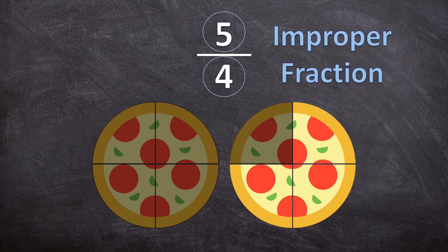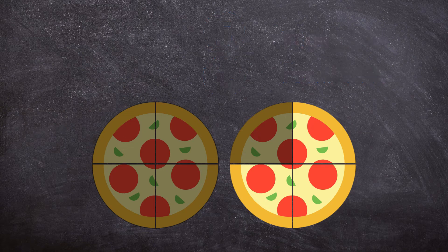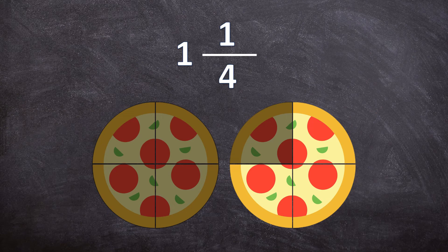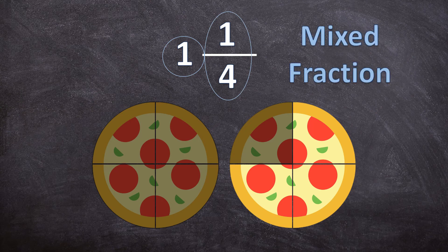Now let's look at one more type of fraction using this same example. We can also say we ate one whole pizza and one piece of the next pizza — one out of four pieces of the next pizza. You can see this looks different from the other fractions because we have a whole number with a fraction, so it is a mixed fraction.